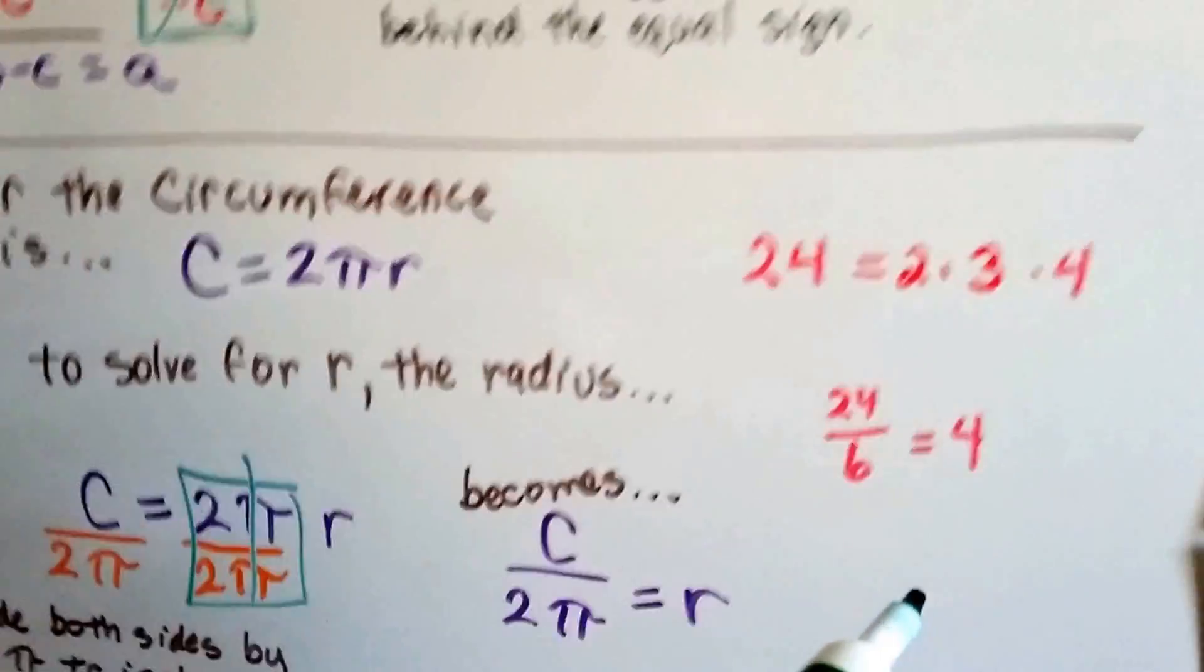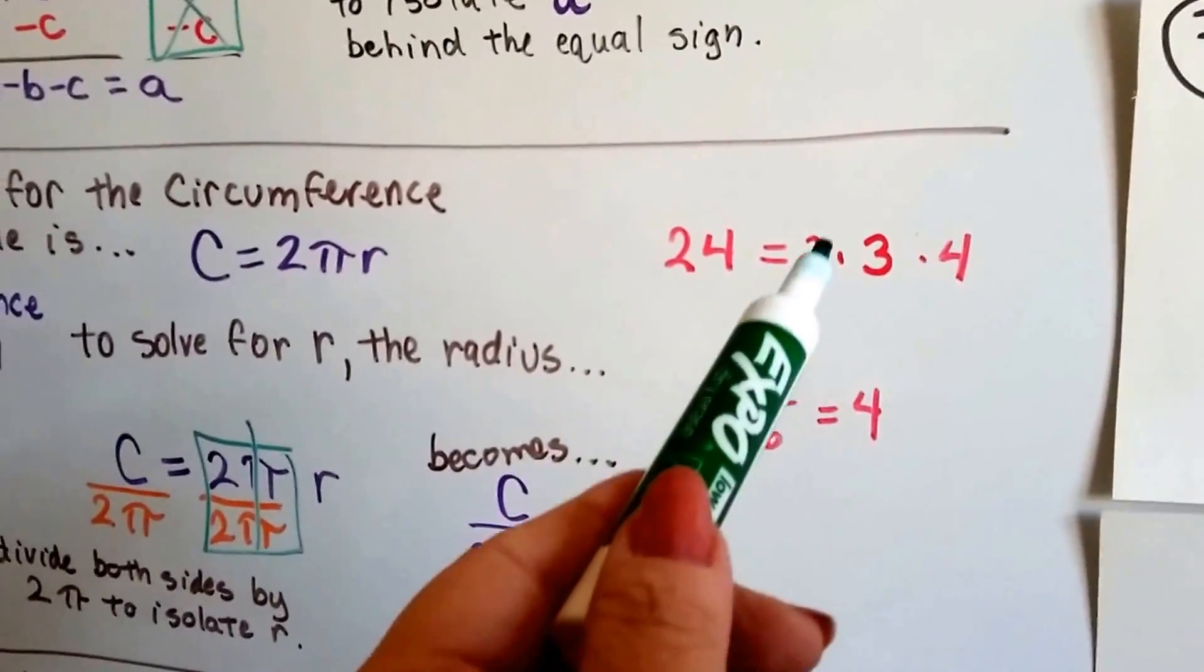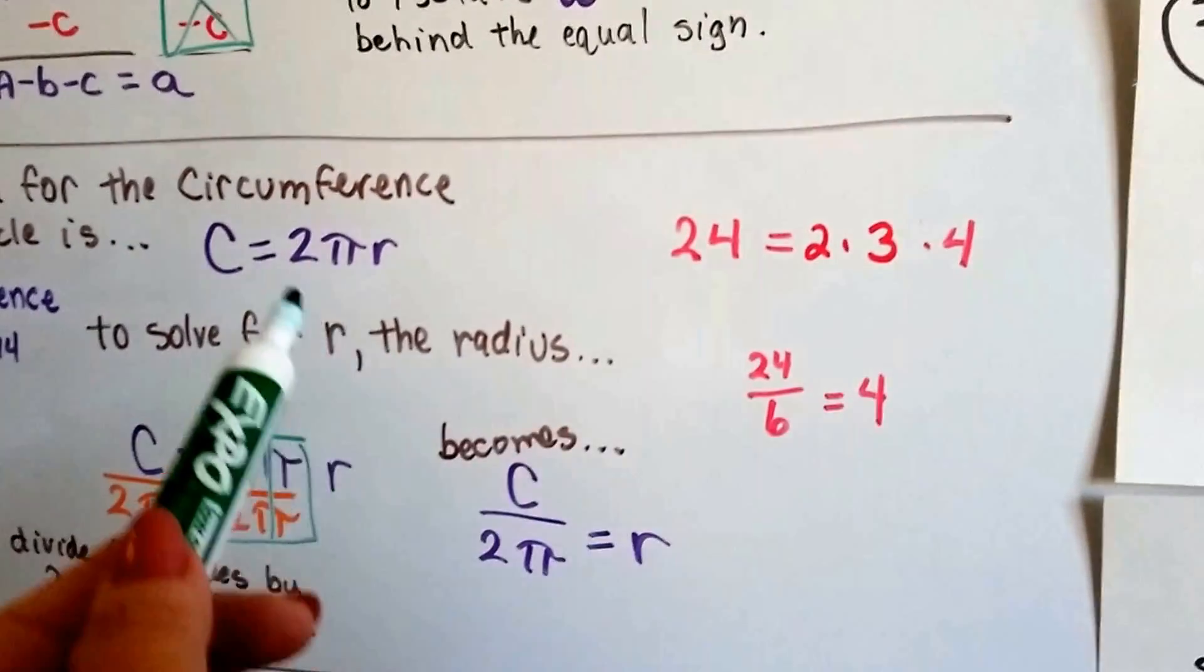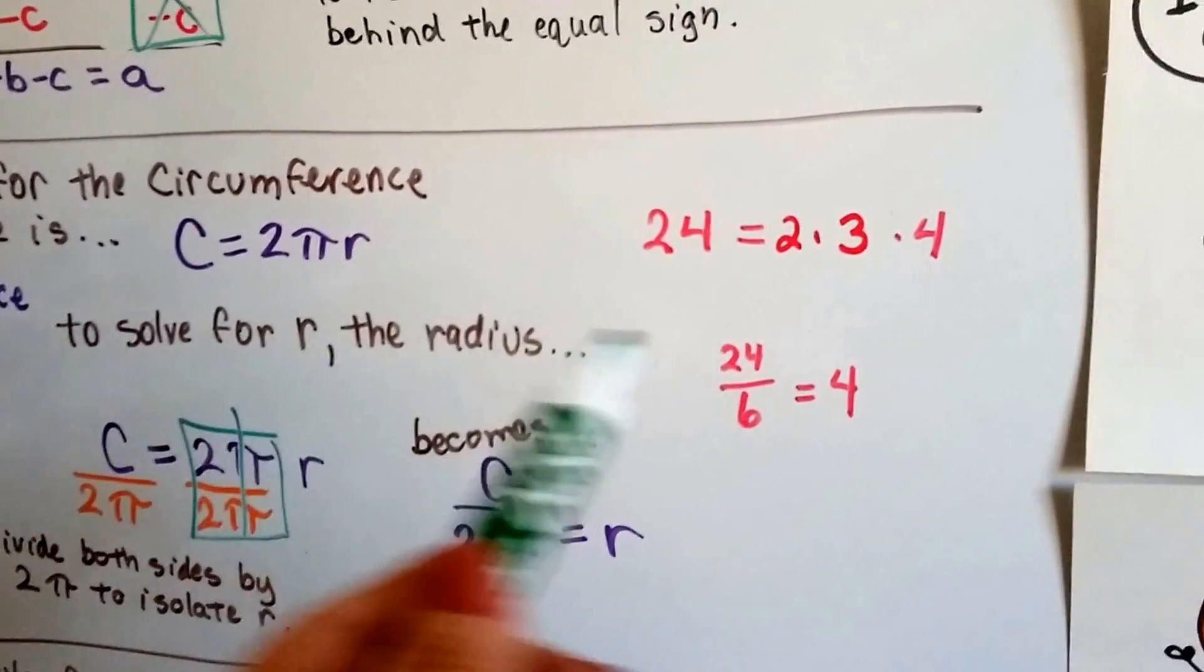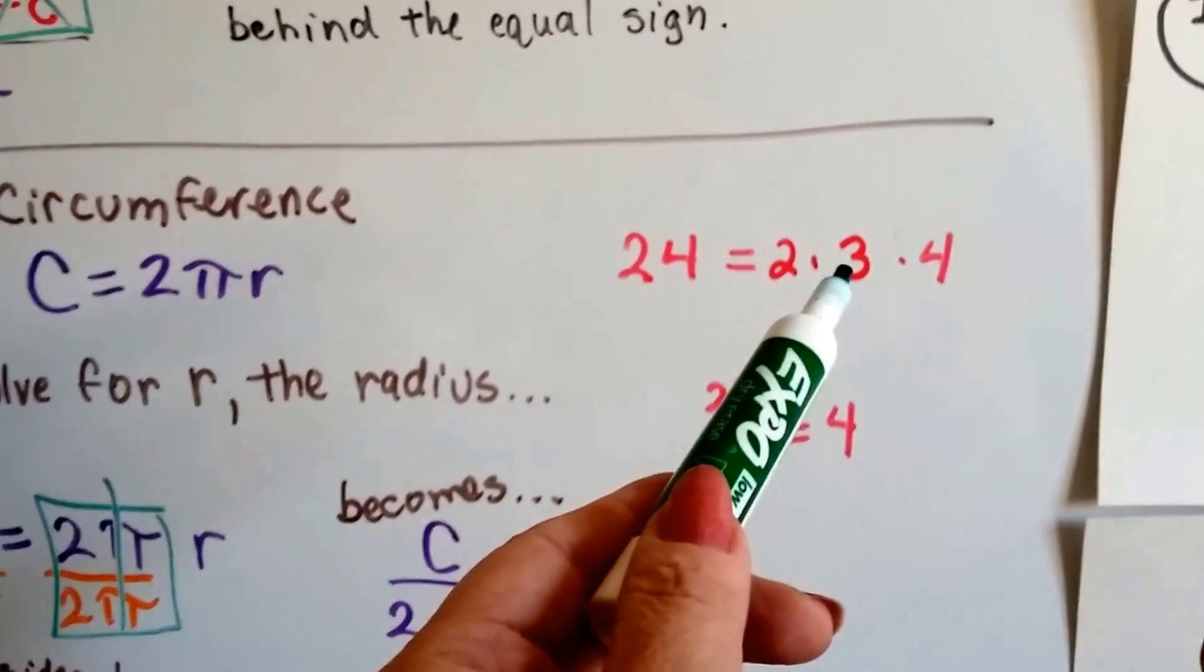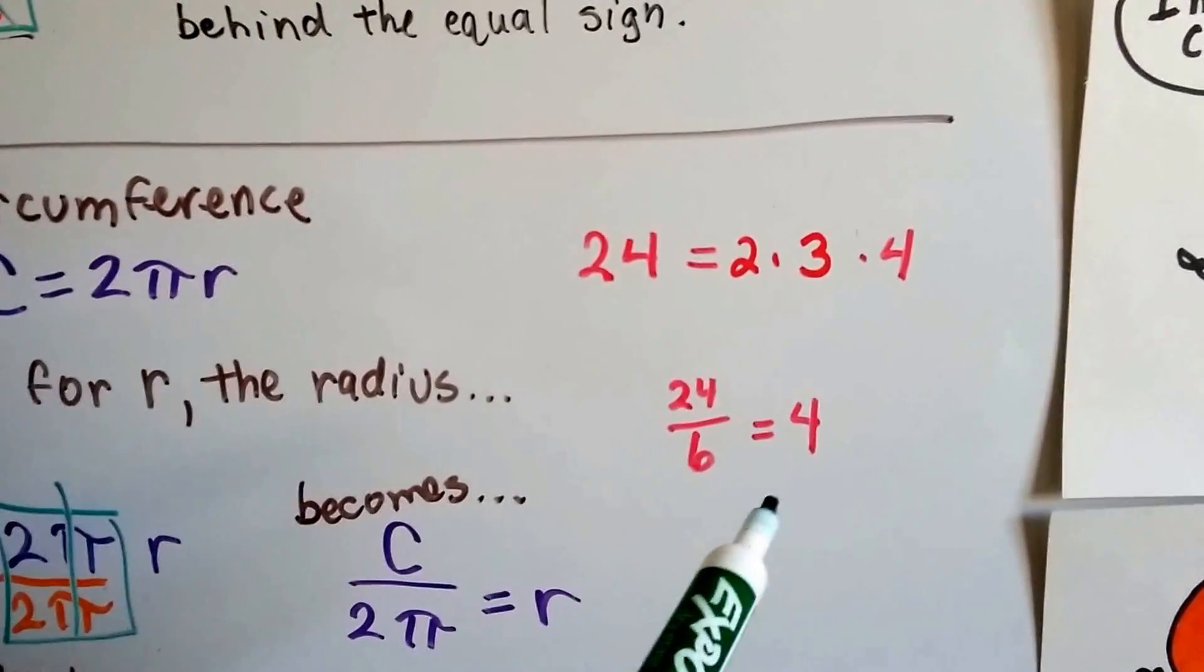It would work if we plug in numbers. What if I said 24 is equal to 2 times 3 times 4? So these three things that need to be multiplied together. Well, 2 times 3 is 6, 6 times 4 is 24, yeah.